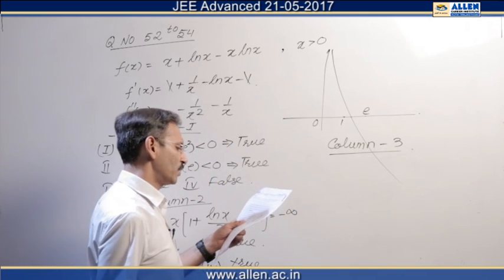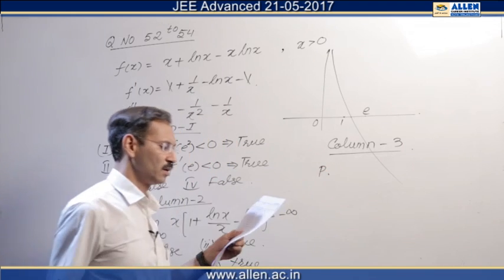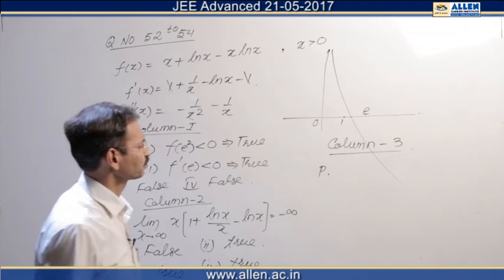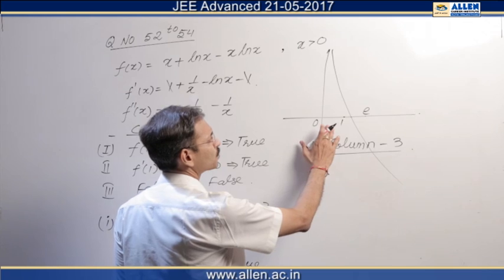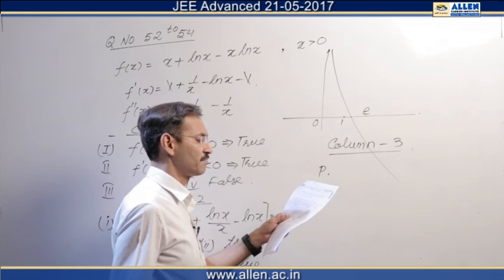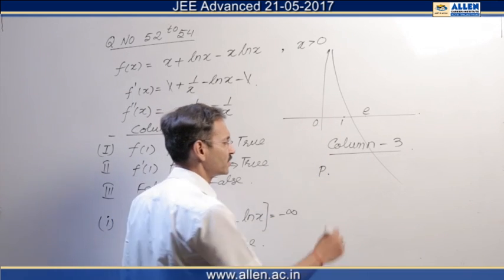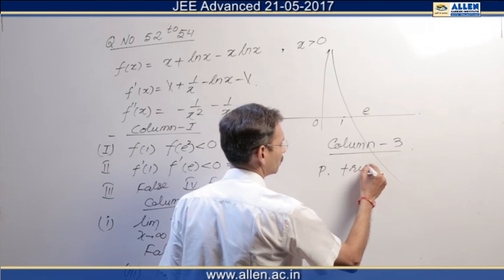Third column: p1 is about increasingness of f. We can see f prime is positive in 0 to 1. That's why f is increasing. That's why this is true.